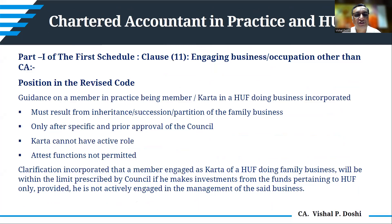Regarding CA in practice and HUF: a CA can be a Karta where the HUF results from inheritance, succession, or partition of a family business, only after specific and prior approval of the Council. A Karta cannot have an active role and attest functions are not permitted. A member engaged as Karta of a HUF doing family business is within prescribed limits if making investments from HUF funds only, provided they are not actively engaged in managing those investments.